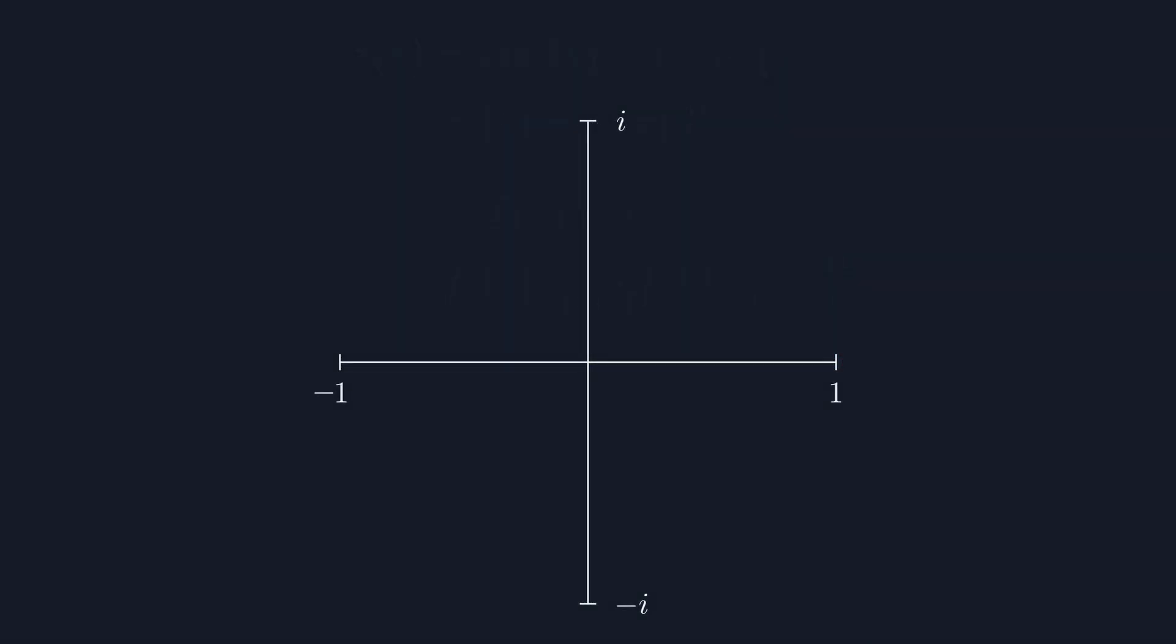The interesting thing about this result is that we got it without ever needing to actually compute e to the i theta. We could reason it out by showing that it shares a point and the velocity of our polar coordinates function. Now then, we should try to compute this function.